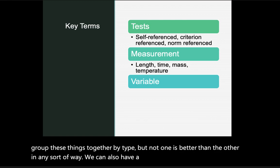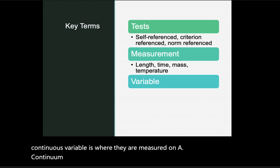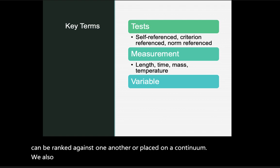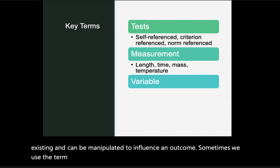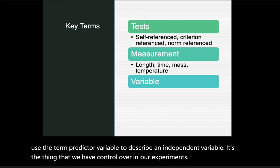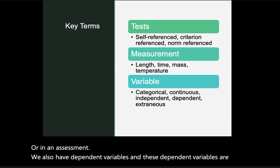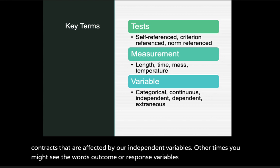We can also have continuous variables, which are measured on a continuum — things such as age, rank, or test scores that can be ranked against one another. We also have independent variables, which are pre-existing and can be manipulated to influence an outcome; these are sometimes called predictor variables. Dependent variables are constructs affected by the independent variable, also referred to as outcome or response variables.